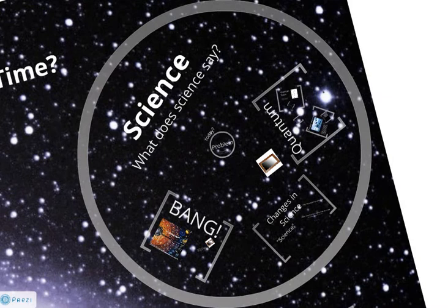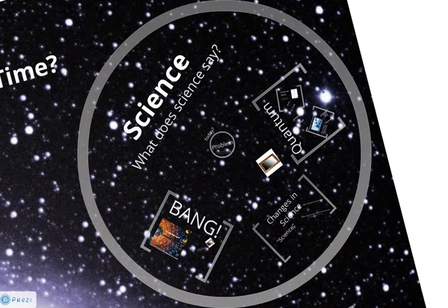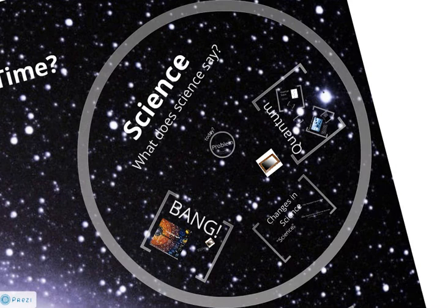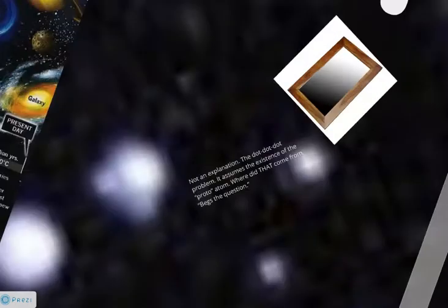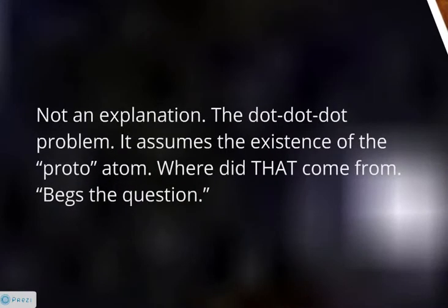So what do they try to do? Well, from one point of view, it makes sense because this is what they really believe, that there was no God. And so there is something now, and it had to have come from somewhere. So they pursue these theories. The one we looked at is the Big Bang Theory, but we know that it's not an explanation. There's this dot-dot-dot problem. It assumes the existence of that proto-atom. Where did that come from? It just begs the question.